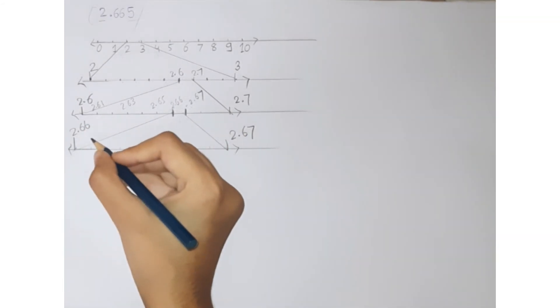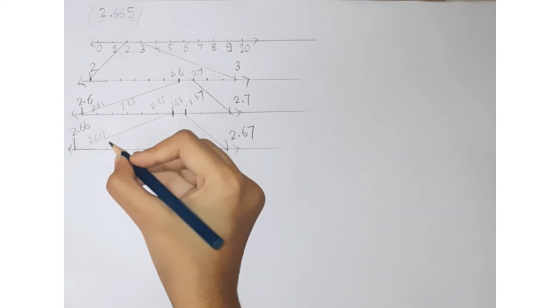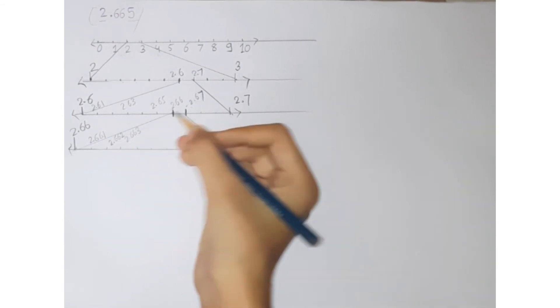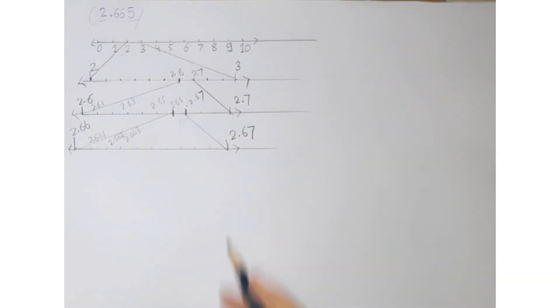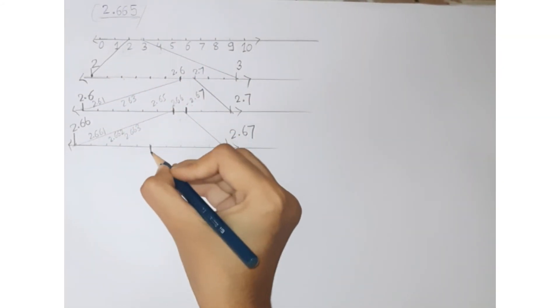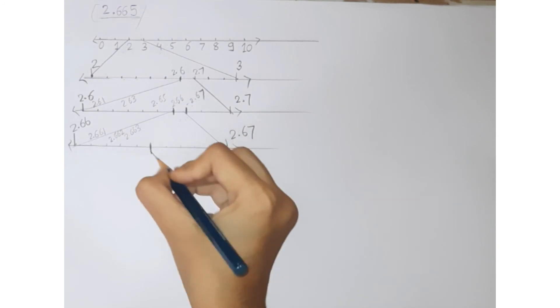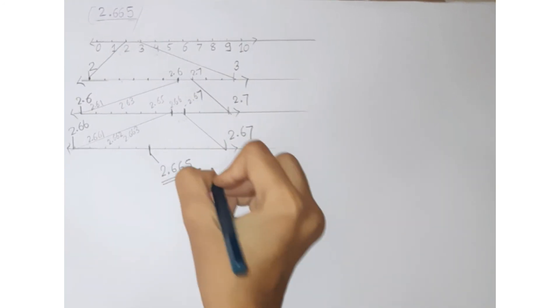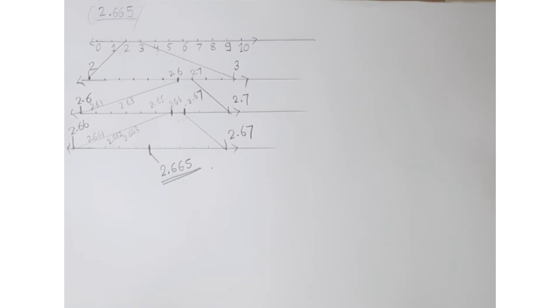Here it would be 2.661, 2.662, 2.663, and in this way the number is 2.665, so the number will lie here. This would be 2.665 on the number line. So this is the place where 2.665 will lie.